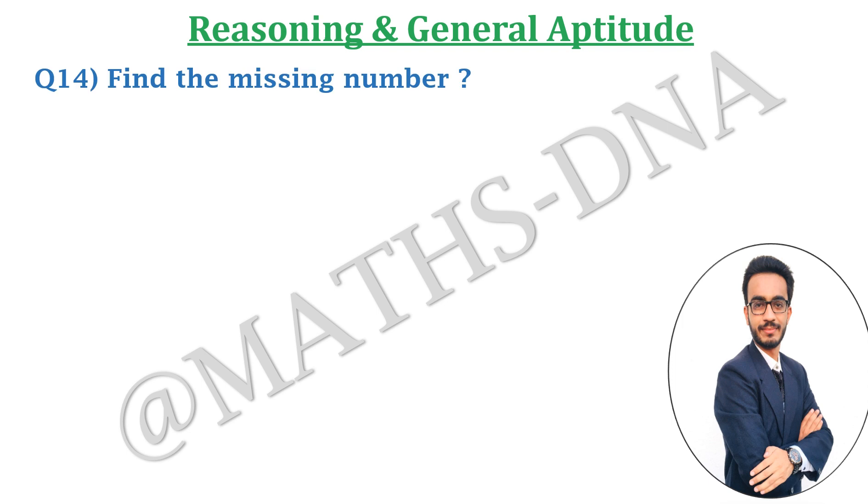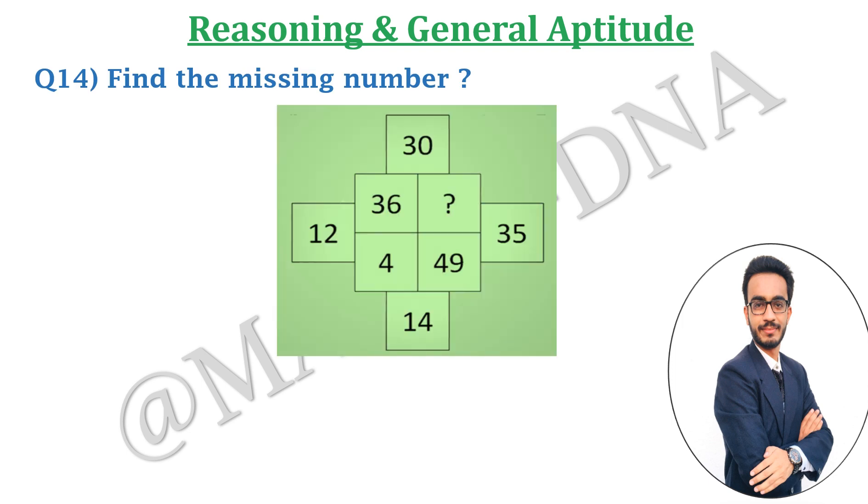The question is, find the missing number and the numbers are given to you as this: 30, 12, 35, 14, and inside the box it is 36, 4, 49, and the missing number.